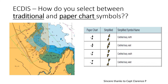Some ECDIS systems color-fill the paper chart buoy shapes, but this is not really required by the International Hydrographic Office ECDIS portrayal specifications — IHO. However, this feature is available in your ECDIS systems for all kinds of traditional aids to navigation, such as floating marks, fixed marks, day marks, buoys, beacons, etc.